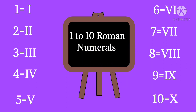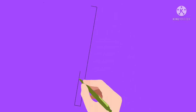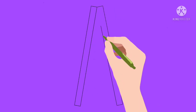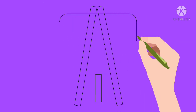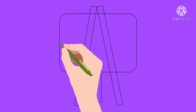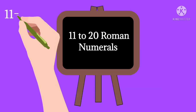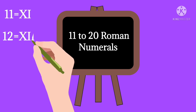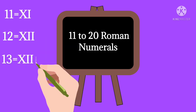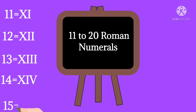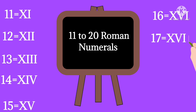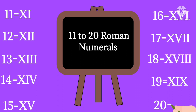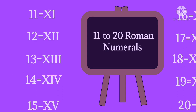After that, we are going to study Roman numerals 11 to 20. Look at the screen: 11 is XI, 12 is XII, 13 is XIII, 14 is XIV, 15 is XV, 16 is XVI, 17 is XVII, 18 is XVIII, 19 is XIX, and 20 is XX.